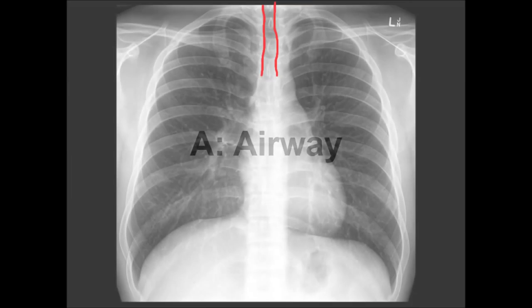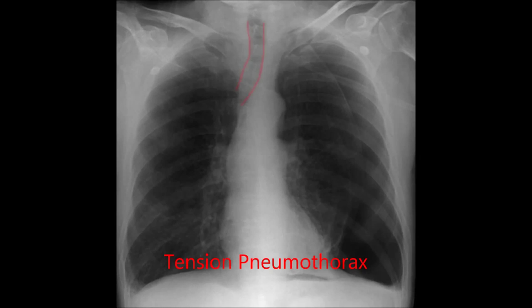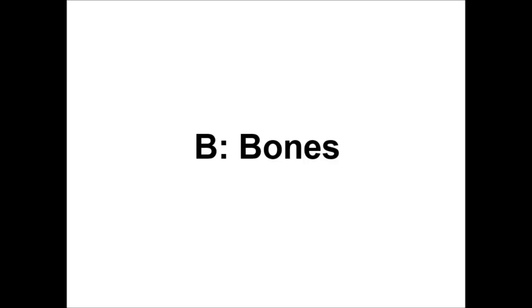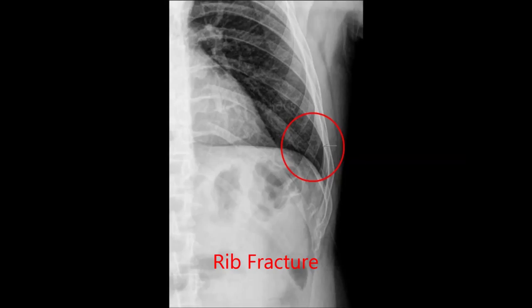Let's start with A, which stands for airway. A normal airway is central and open. An airway that deviates to one side may be due to a tension pneumothorax. B stands for bones. Start at the top and work your way down, making sure that you look at all the bones visible on the film. The outlines of each bone should have a smooth contour, and a break in the contour could be a subtle indication of a fracture.